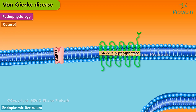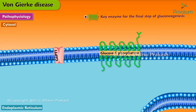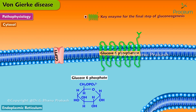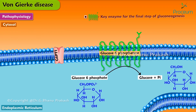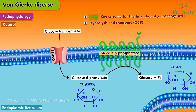The pathophysiology is as follows. Glucose 6-phosphatase is a key enzyme required for the final step of gluconeogenesis, where glucose 6-phosphate converts into glucose. The hydrolysis and transport of glucose 6-phosphate, or G6P, requires a catalytic hydrolase and microsomal transporters.